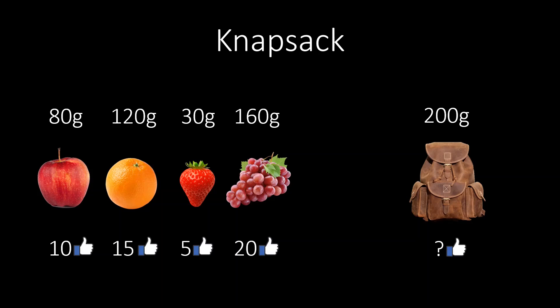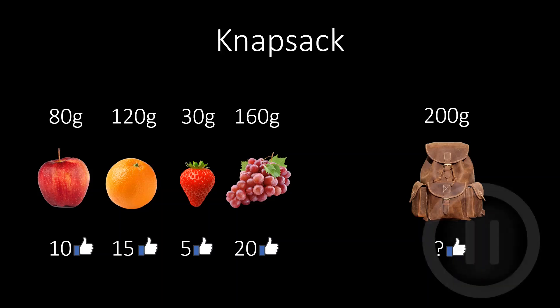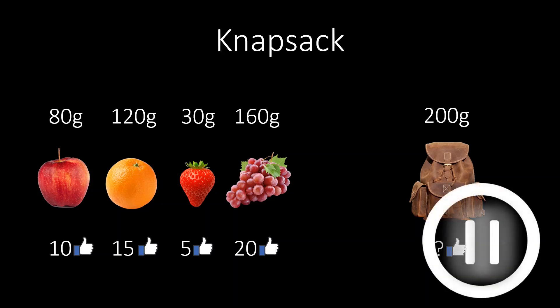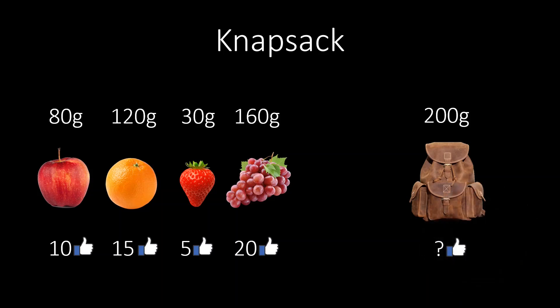In our example, it is 200 grams. This probably seems like a tiny knapsack, but it's only an example. Pause the video for a moment, to decide which fruits to best put in the knapsack. In this example, the maximum value we can fit into the knapsack is 25. There are two possibilities of achieving this. Either by choosing the apple and the orange, or by choosing the strawberry and the grapes.